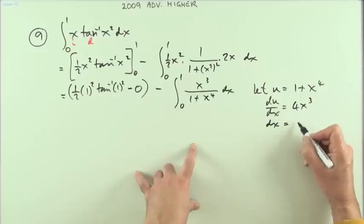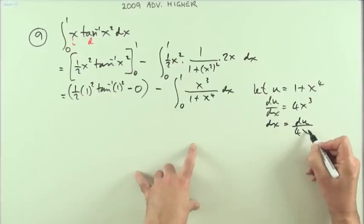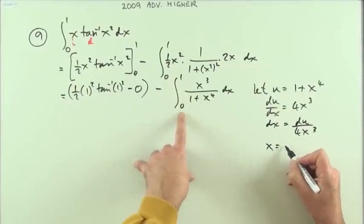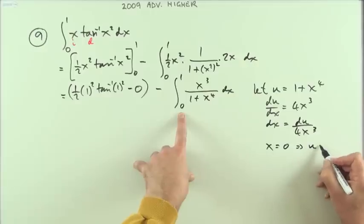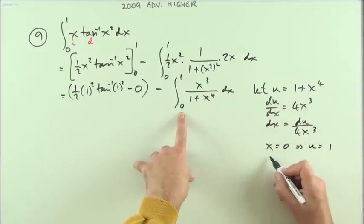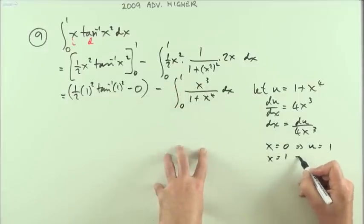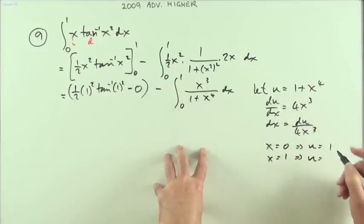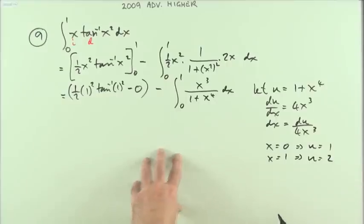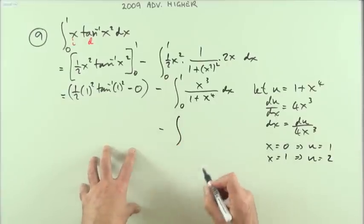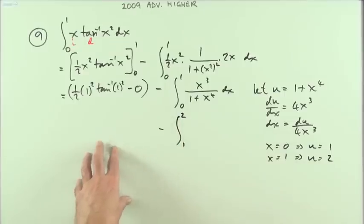If you're going to be changing that, change the limits at the same time. I'll just flip that differential about, so dx would be du over 4x cubed. Then if x was 0 that would mean that u would equal 1 plus 0 is 1, and if x was 1 that means that u would equal 1 plus 1 to the 4 which is 2. And then just feed that in, so I'm actually going to go from 1 to 2.